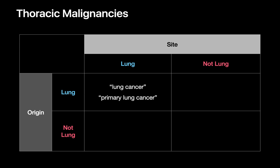We generally refer to malignancies that originate from the lung and are located in the lung as lung cancer or primary lung cancer. While malignancies that arise from a different organ, let's say the breast, are named and treated by the organ of origin. So breast cancer cells in the lung are generally not referred to as lung cancer, but metastatic breast cancer to the lung. Likewise, when cancer of lung origin spreads to another organ, for example the liver, we don't generally refer to those as liver cancer, but rather metastatic lung cancer to the liver.